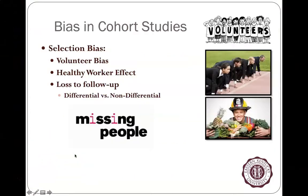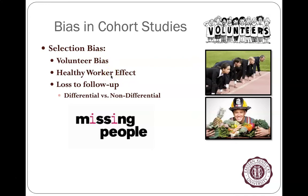Studies have to be feasible and you have to be able to follow up with people. One problem is that volunteers who agree to participate may not represent the general population. Not everyone will want to commit to follow-up visits every year for 10 years. Incentives like free medical care and payment may attract lower-income participants. There's also the healthy worker effect to consider — people who are working may be systematically different from those who stop working.